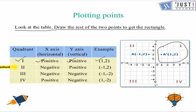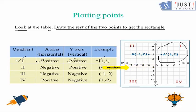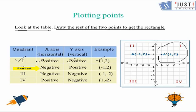In the second quadrant, we have a negative x value, because if we travel from 0 in that direction we get all negative numbers. When we go up we get positive numbers. So in the second quadrant, the x value is negative and the y value is positive.